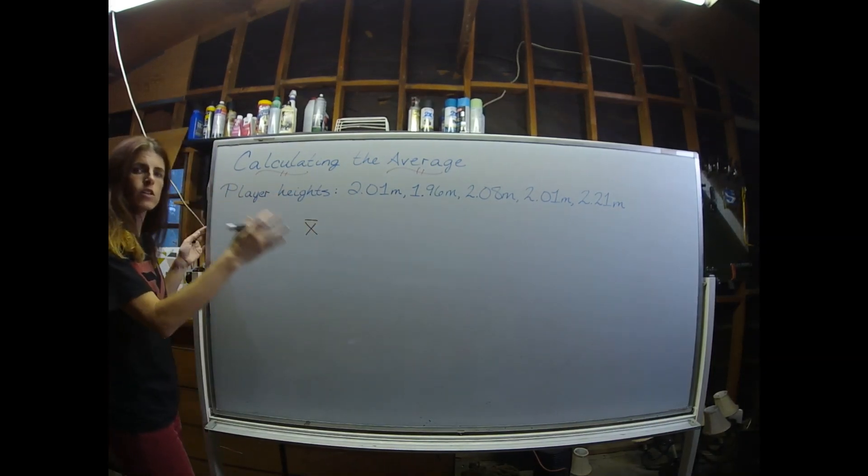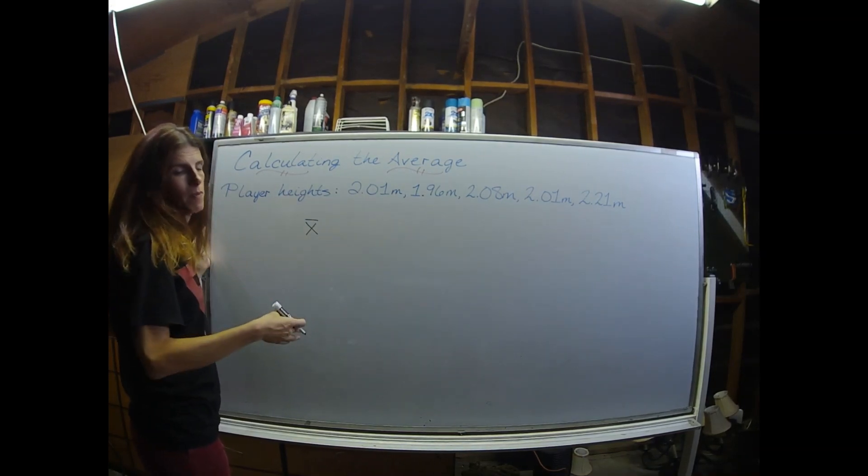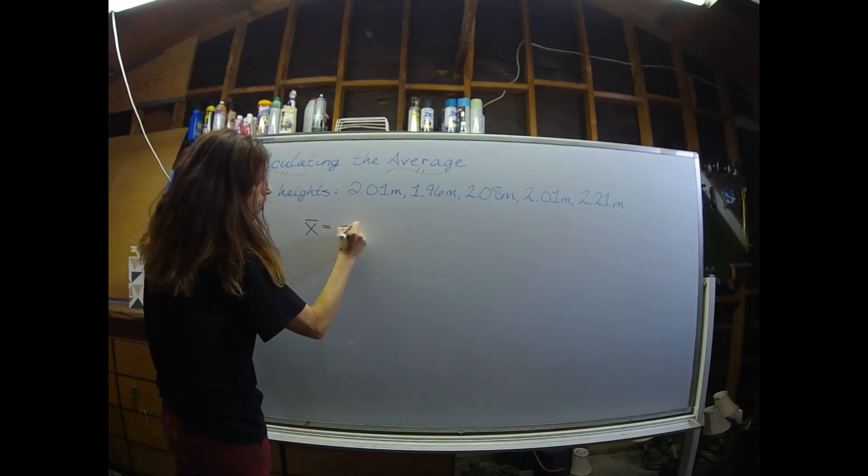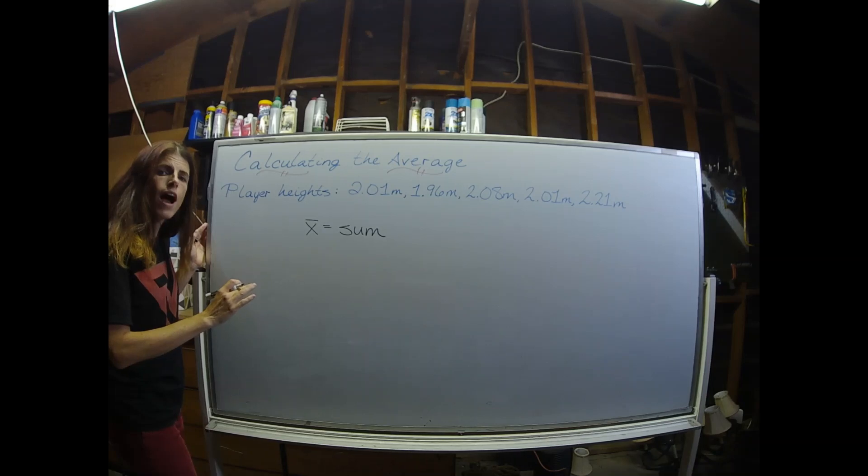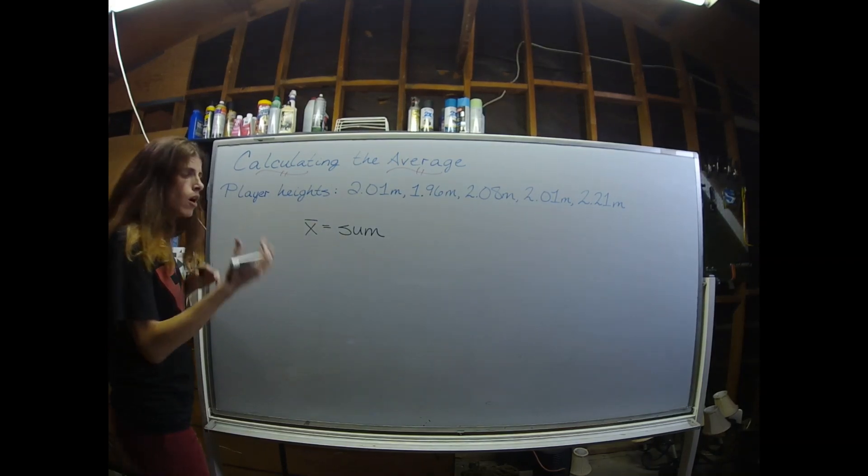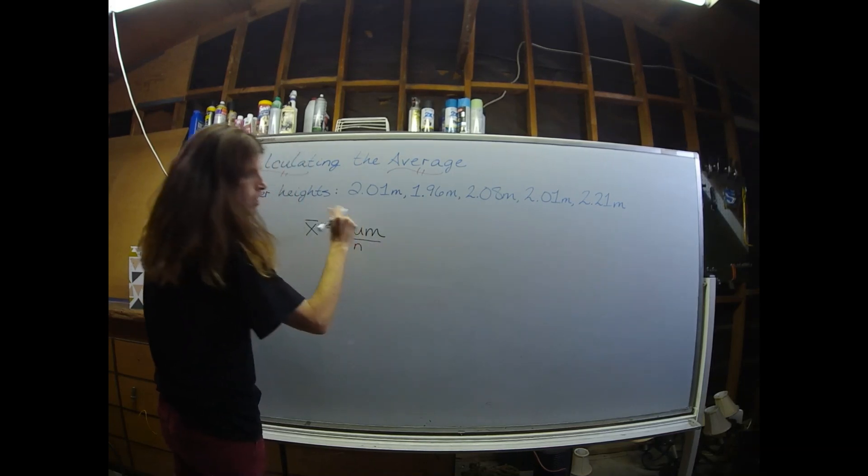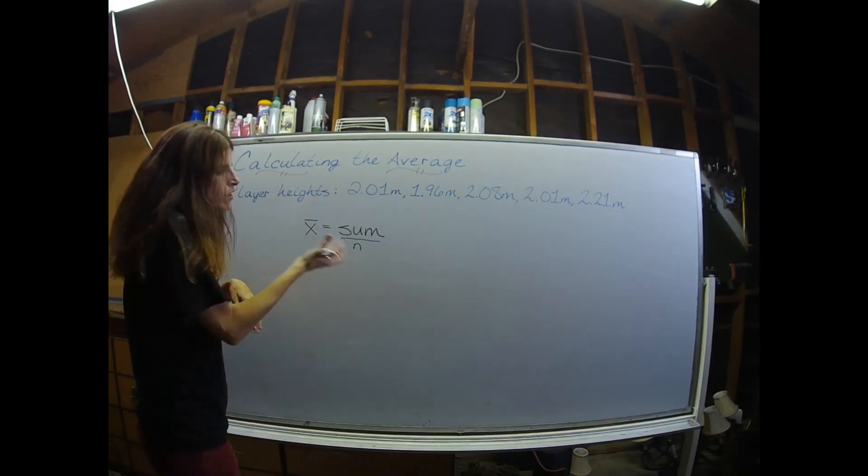The average or mean is symbolized by x-bar. So for this particular example, we have the heights of the starters on the Dallas Mavericks. We're going to start by summing up all of those data points, and then divide by the total number of samples in your data set. In this case, since there's five starters, we're going to divide by five.